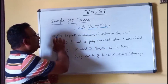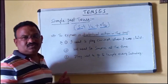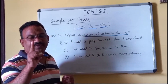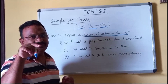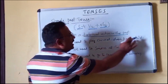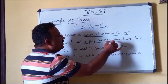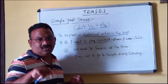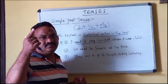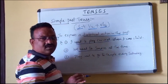The second condition is to express a habitual action in the past. Whatever habitual actions happened in the past, we use simple past tense. For example: 'I used to play cricket when I was a child' — but not now. 'I used to play' indicates a past habit.